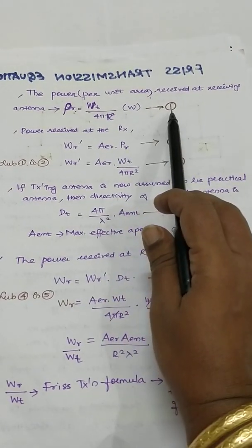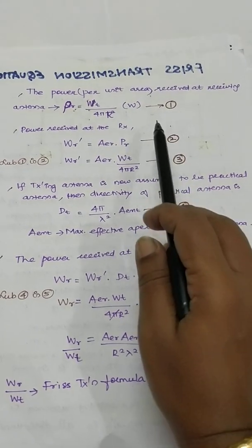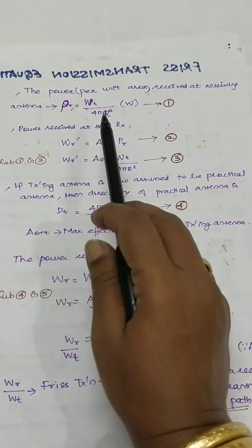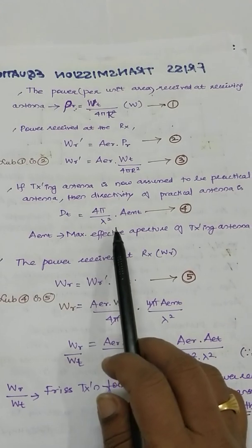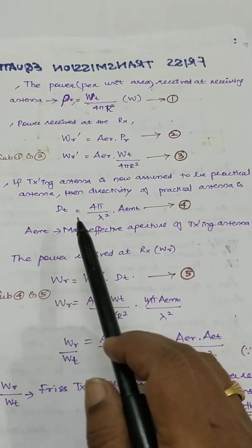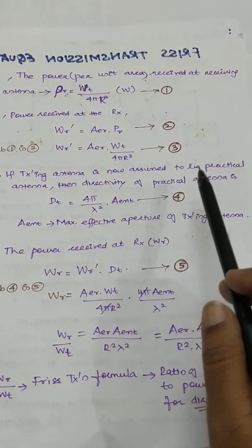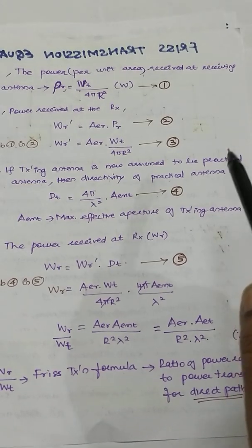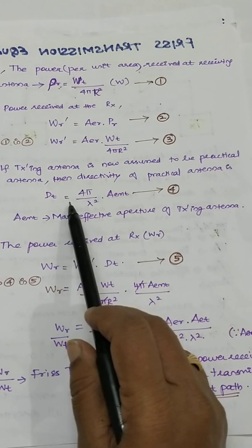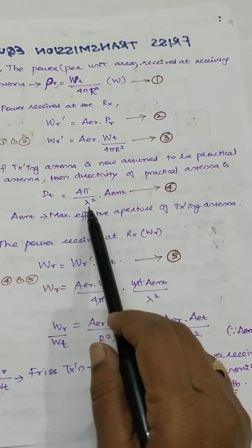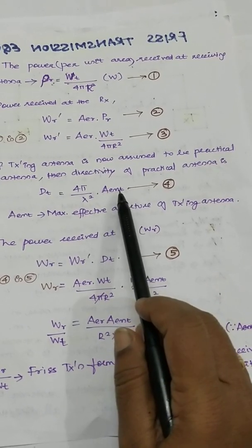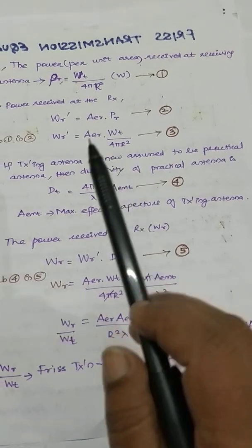Labeling these as equations 1 and 2, and substituting, WR' is redefined as AER × WT divided by 4πR². This is one set of conditions assuming the antenna to be isotropic. Now, if we assume the transmitting antenna to be a practical antenna, there is a term called directivity included. The directivity of the transmitting antenna is defined by the relation DT = 4π divided by lambda squared, times AEMT, where AEMT is the maximum effective aperture of the transmitting antenna.